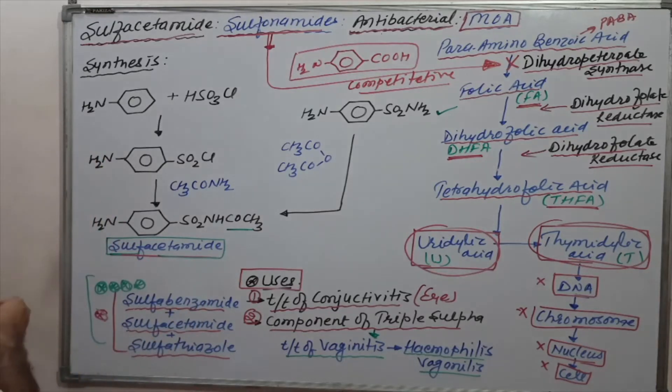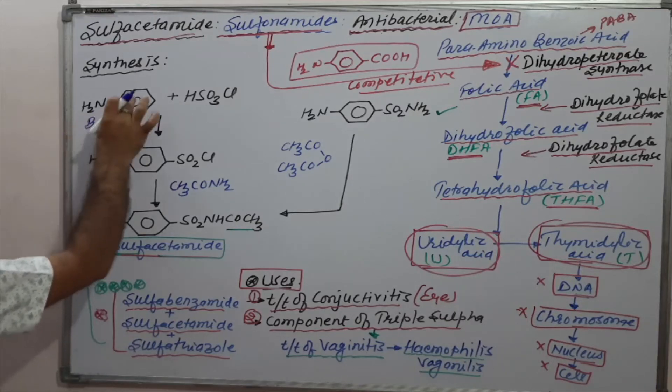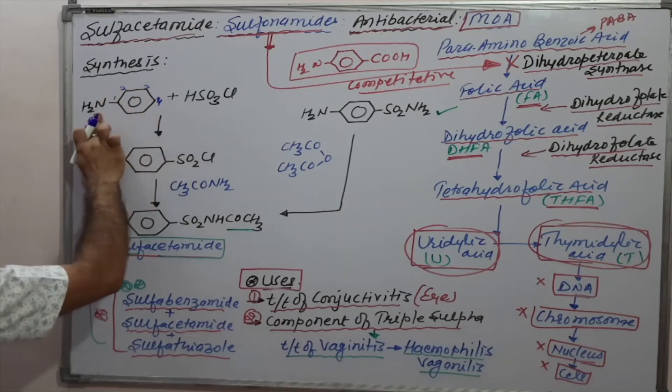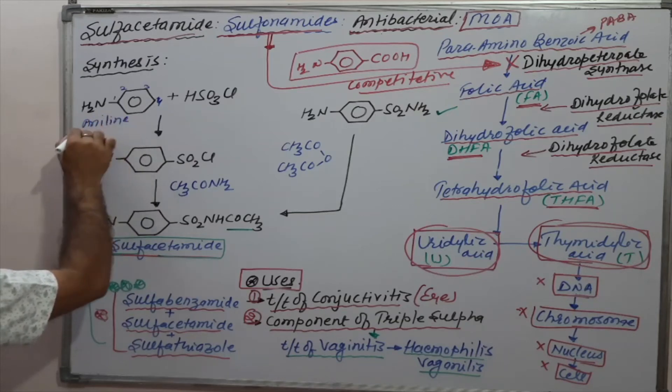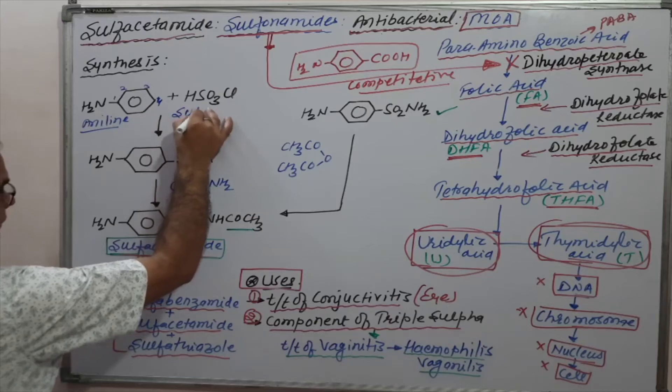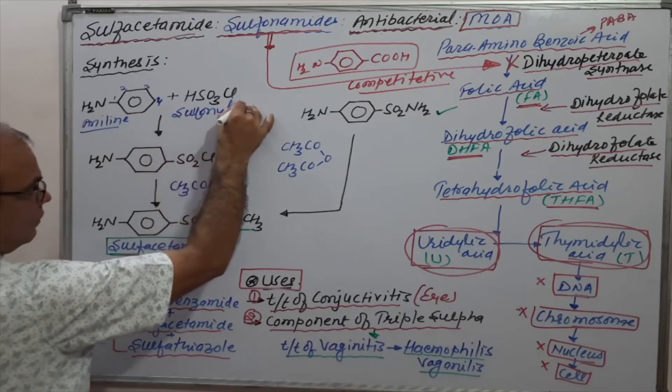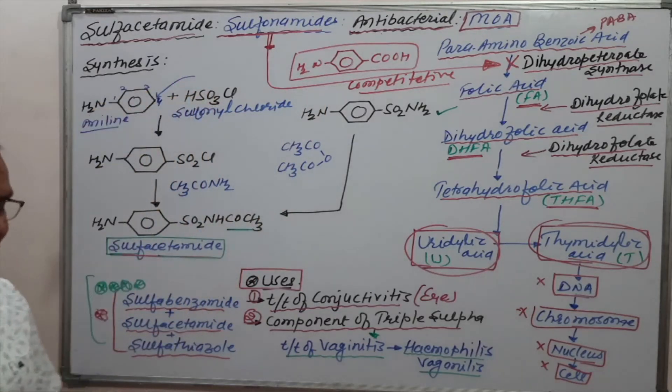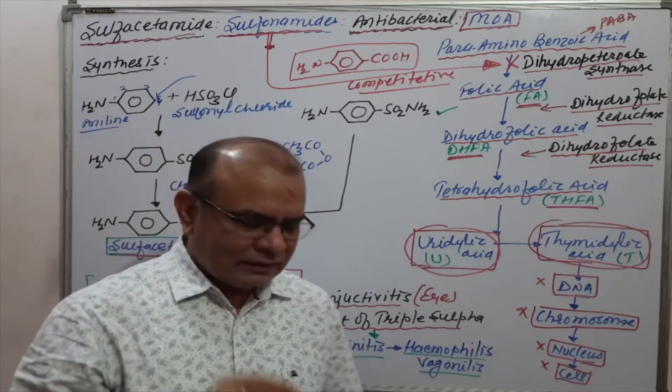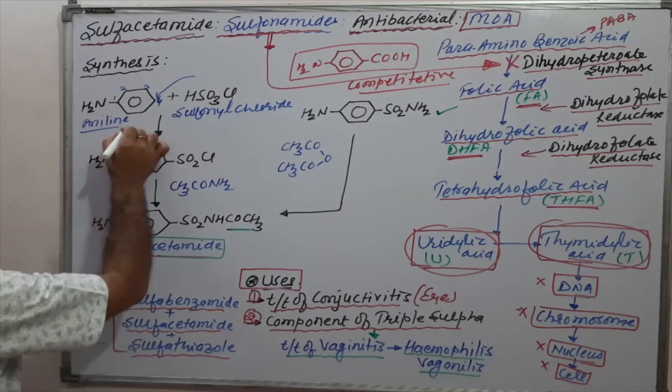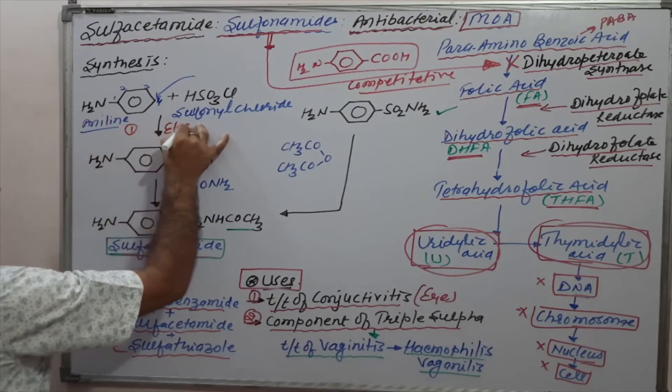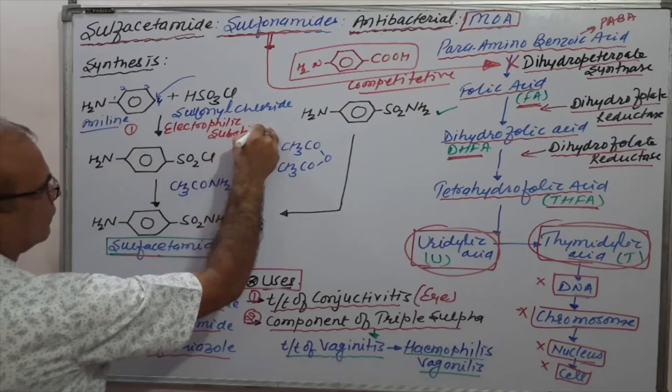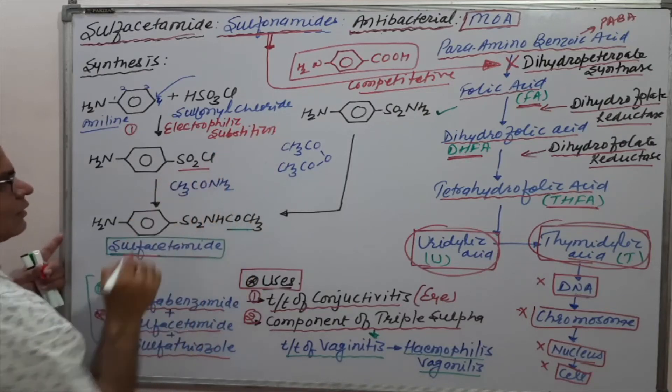If we are taking benzene with an amino group, what is the name? Aniline. This is aniline and sulfonyl chloride. Sulfonyl chloride undergoes lone pair of position attack. Which type of reaction? That is electrophilic substitution reaction. Reaction number first is electrophilic substitution reaction.